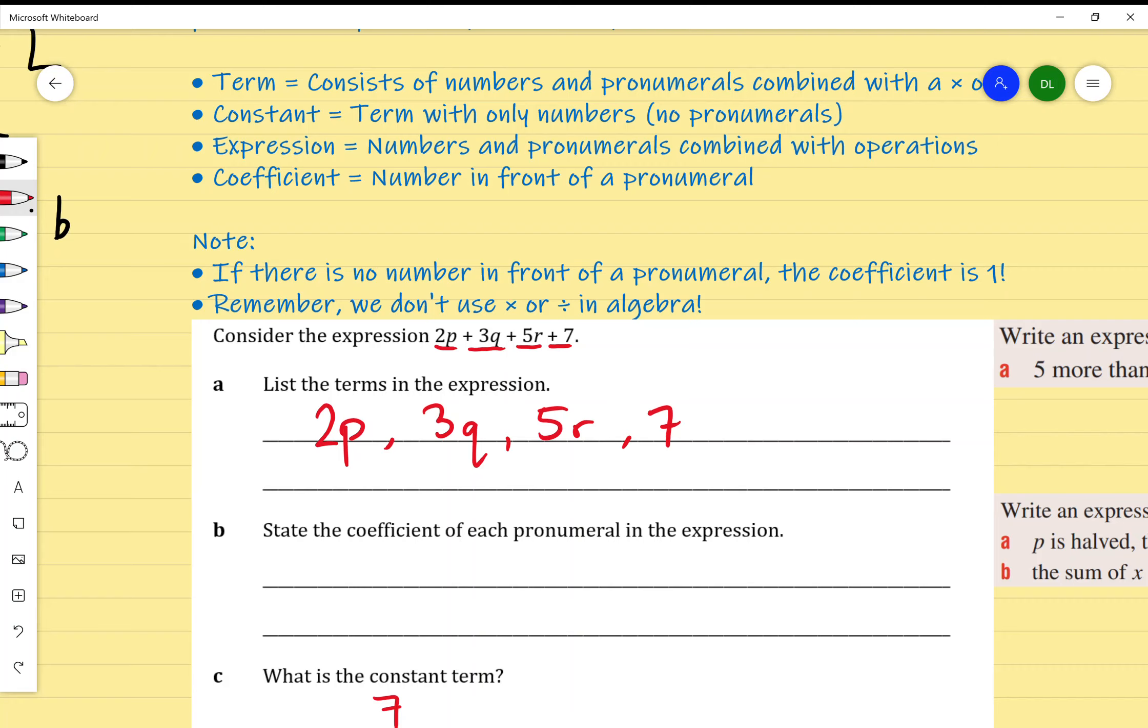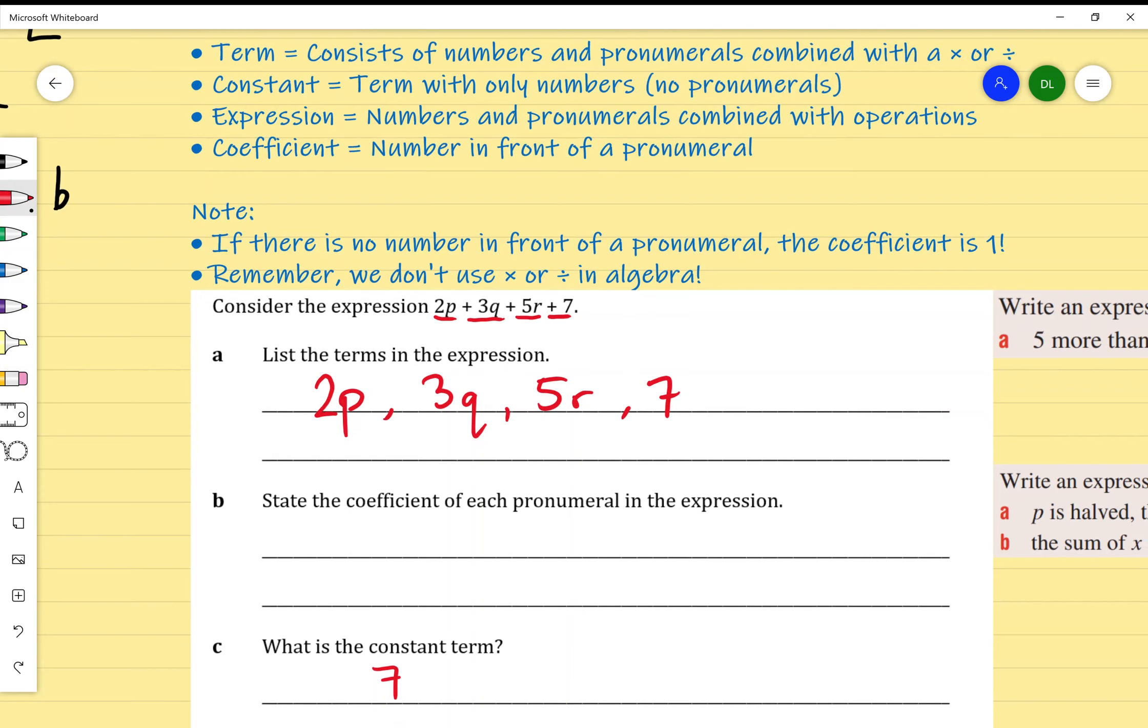Finally, the last term we're looking at today is coefficient. Coefficient is just a fancy math word for the number in front of a pronumeral. We've already identified the terms in this expression. To identify the coefficient, I just look at the number in front of the pronumeral. In 2P, the number in front of P is 2. In 3Q, the number in front of Q is 3. In 5R, the number in front of R is 5. Is there a coefficient of 7? Not really, because there's no pronumeral in that term.